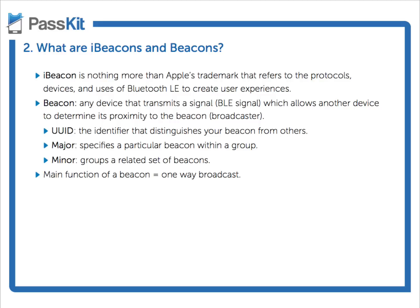It lets a user's phone or their tablet figure out what its proximity to the beacon actually is. The signal that's actually being sent is called the UUID — the Universally Unique Identifier. The UUID helps distinguish your beacon from other beacons. For example, Apple would probably have one UUID for its beacons in one store, and another company may have a different UUID.